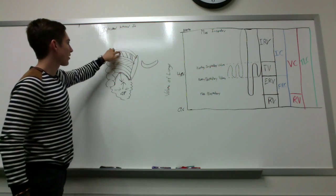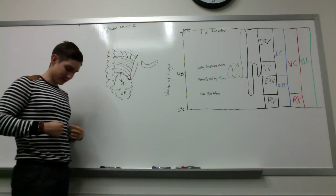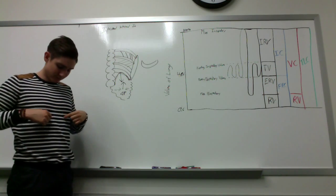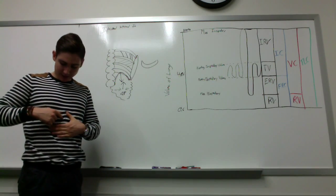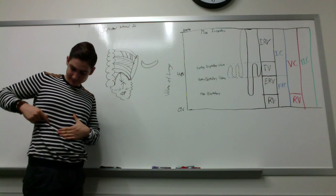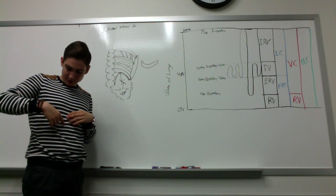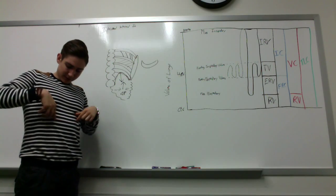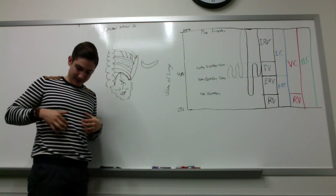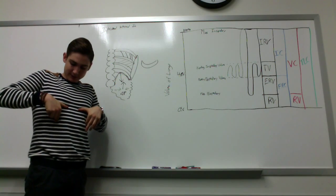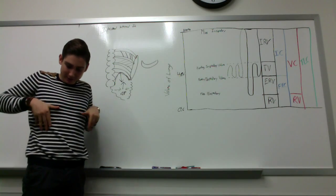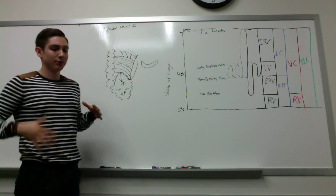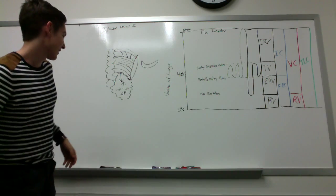You might wonder why the external intercostals run one direction and the internals run the other. If the externals are running diagonally one way and they contract to shorten, they slide in a way that pulls the ribcage up. If the internals run the opposite direction, when they contract they pull the ribcage inward and down. That's why the internals are used to push air out.